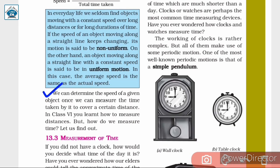We can determine the speed of an object once we can measure the time taken by it to cover a certain distance. In class 6, you learned how to measure distances. We will discuss how to measure time — the topic of measurement of time — in the next class.